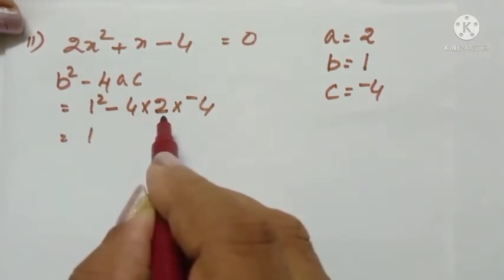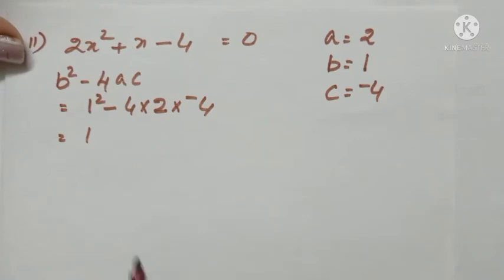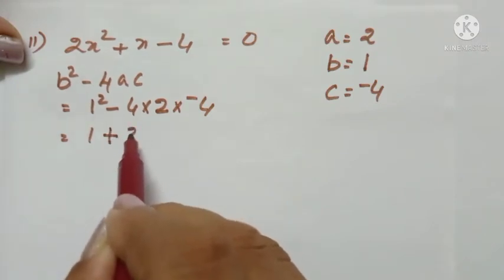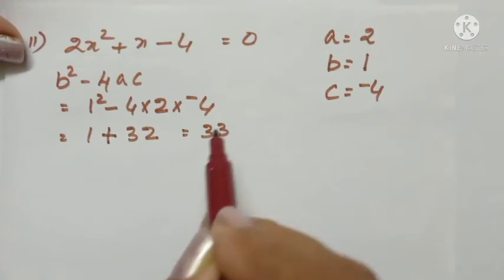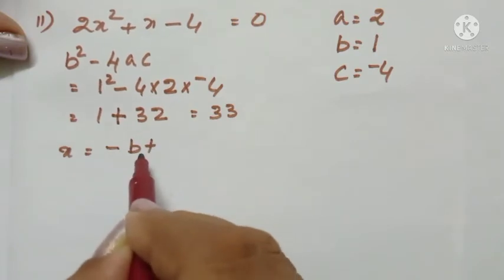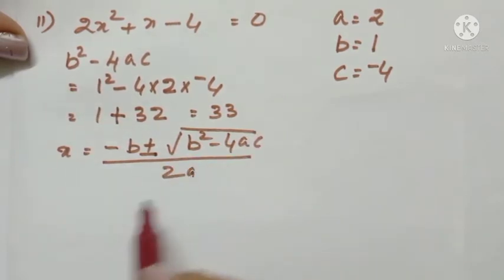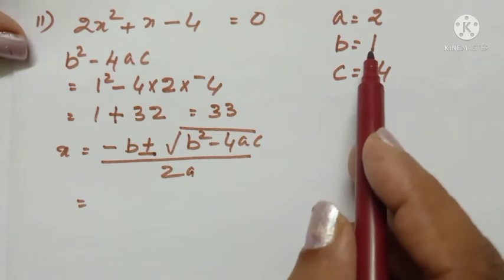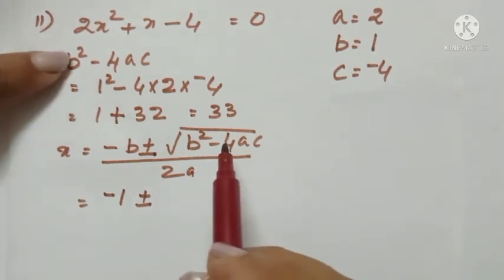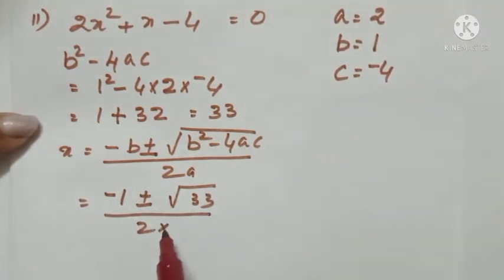4 times 2 is 8, and 8 times 4 is 32. Since minus times minus is positive, we get 1 + 32 = 33. So b² - 4ac = 33. Applying the quadratic formula: x = (-b ± √(b²-4ac)) / 2a. Since b = 1, minus b = -1. Therefore x = (-1 ± √33) / (2 × 2).